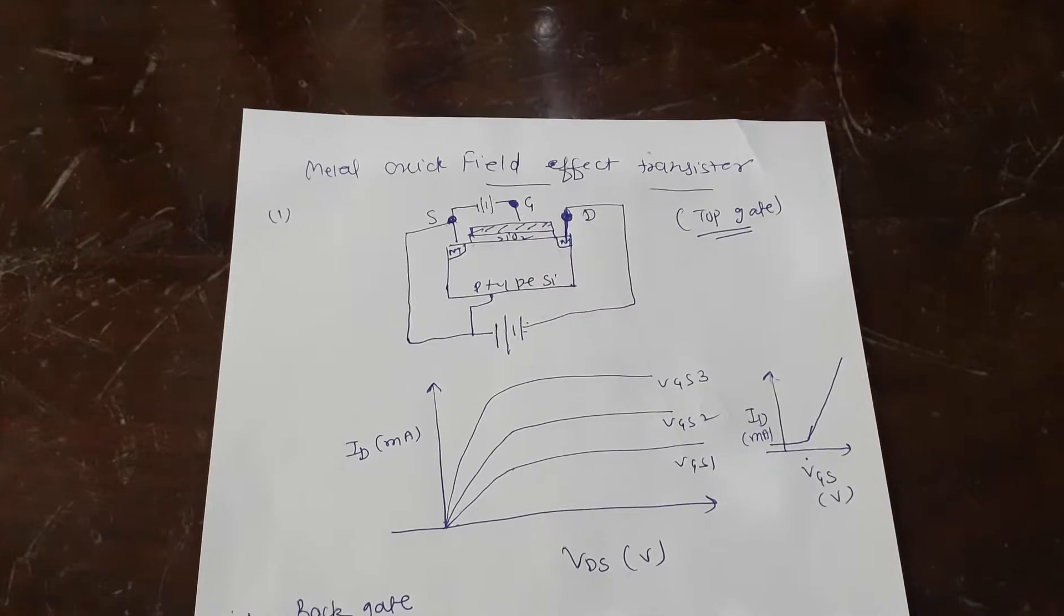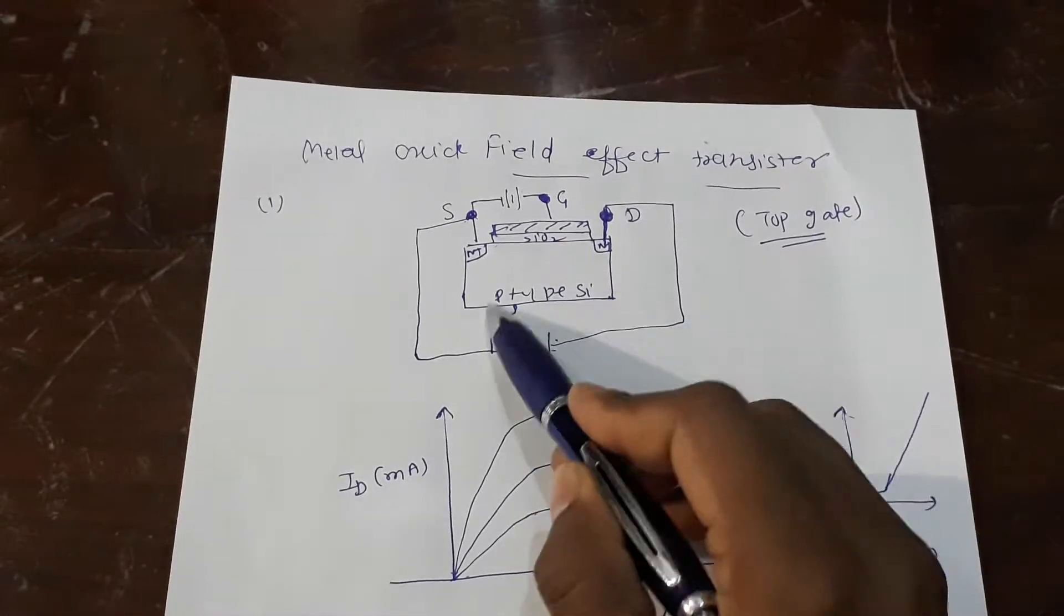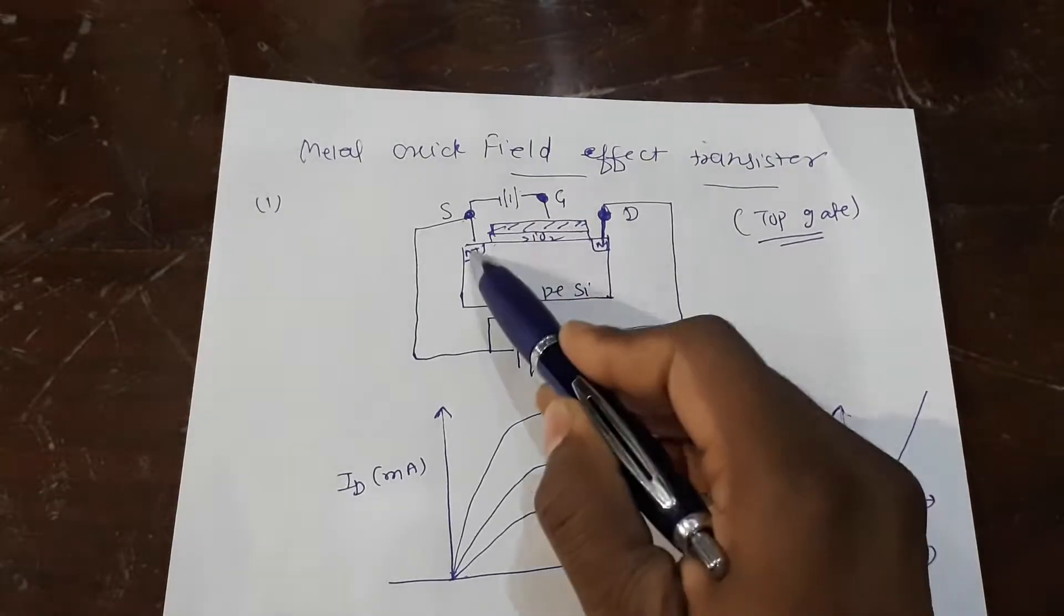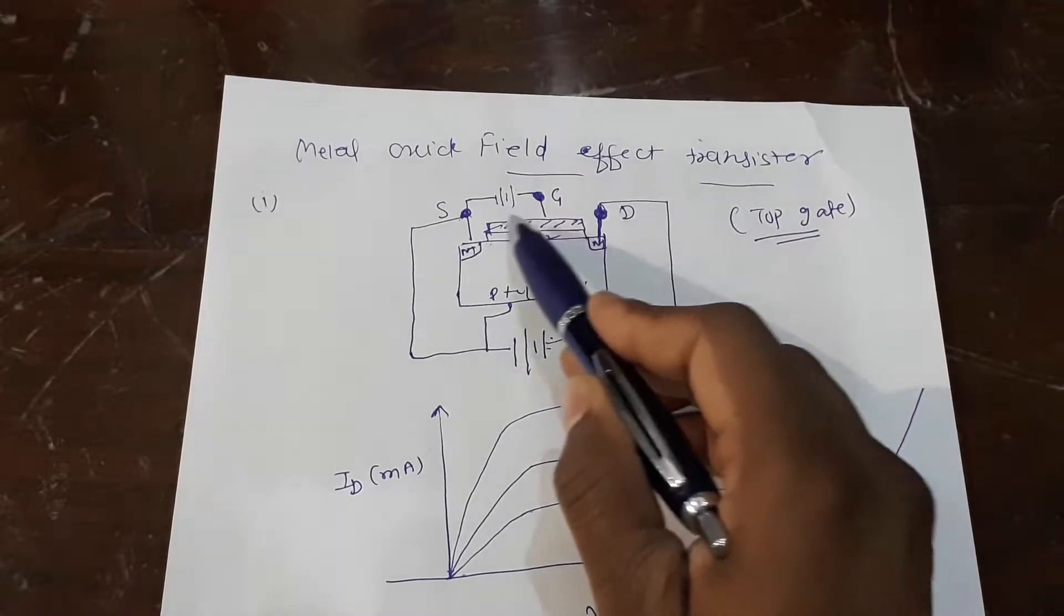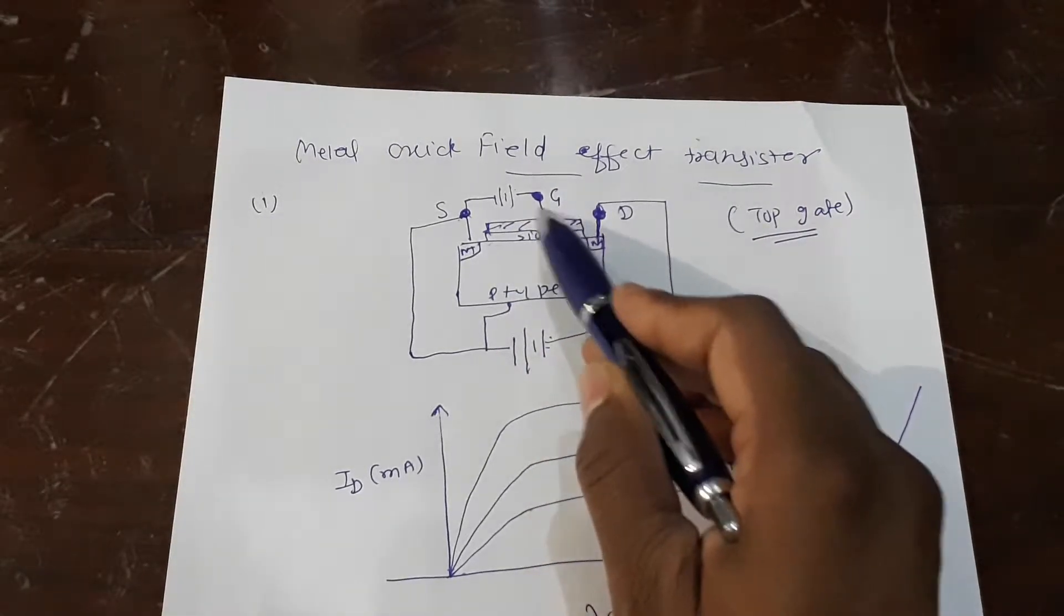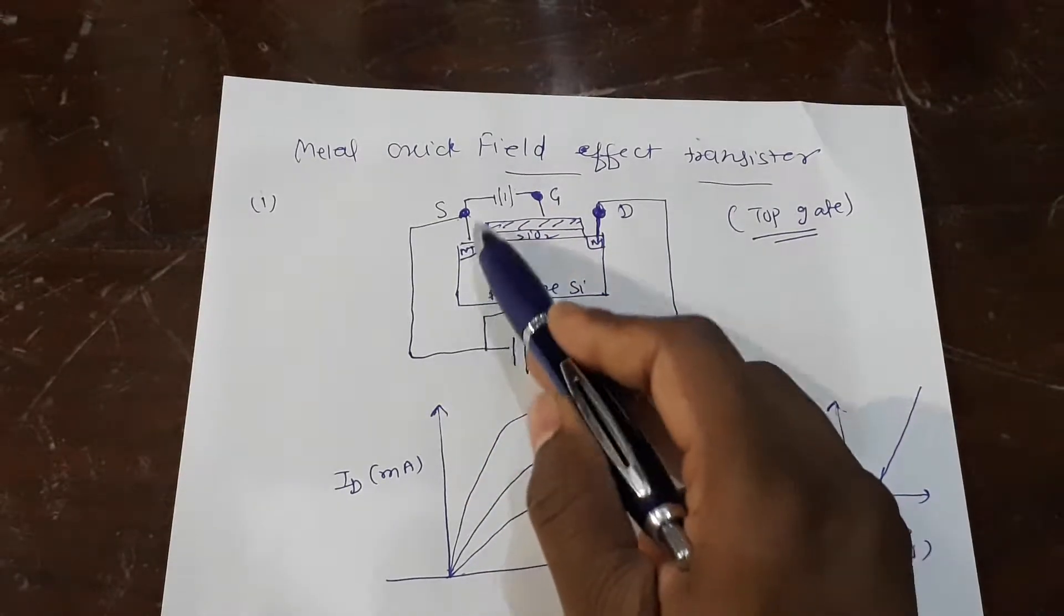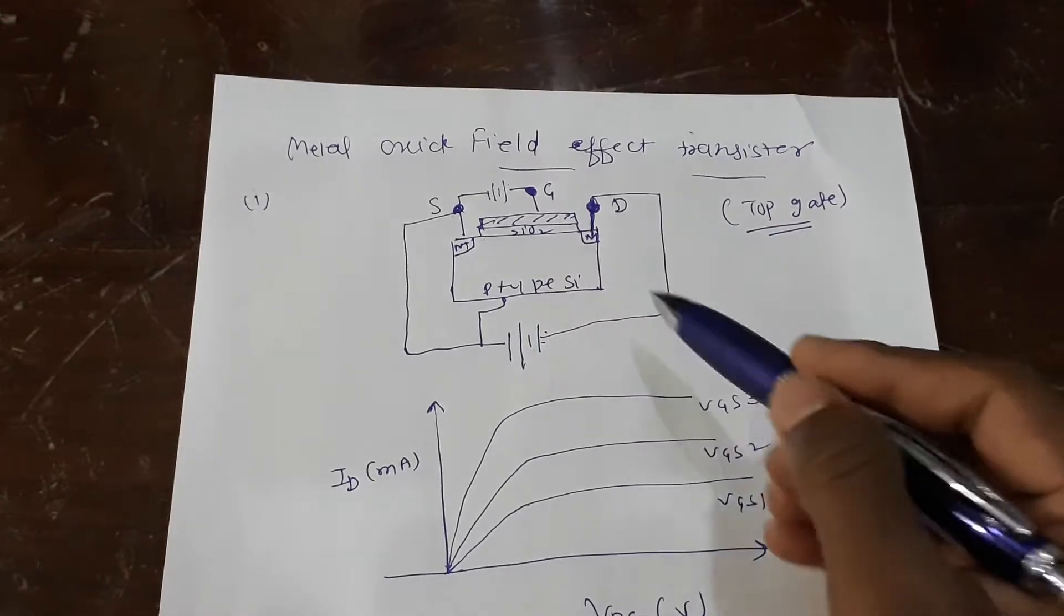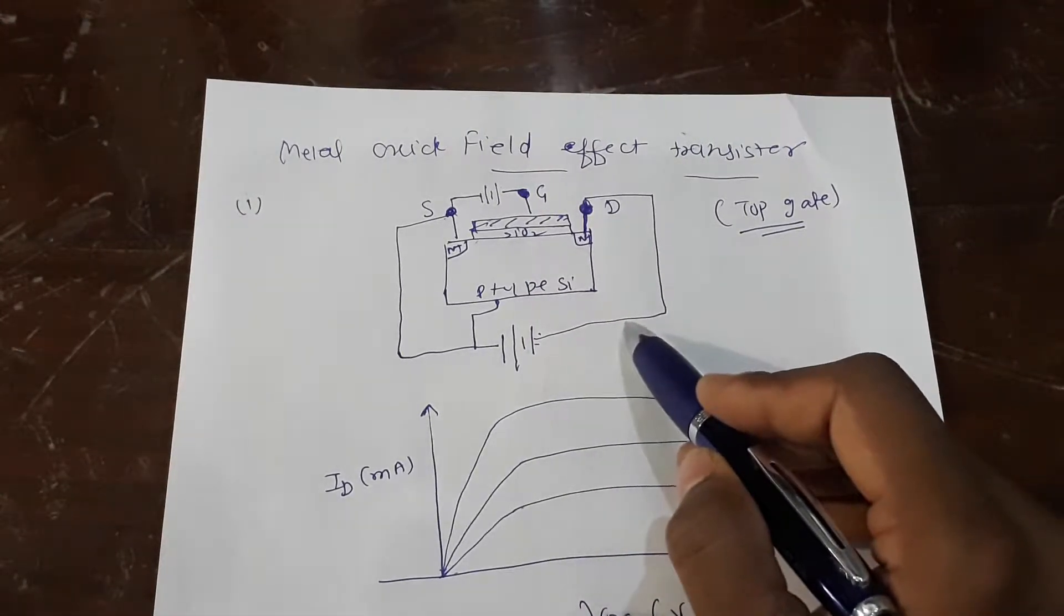This is your conventional transistor. If you see, there is silicon—I have written p-type, doesn't matter, just for the sake of simplicity—and you have contacts and you have the silicon dioxide, and then you put a metal electrode to bias it. So you apply bias to source and drain, and you apply your gate voltage. So this is your typical transistor which is done by lithography in your mobile phones and everywhere.